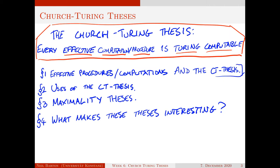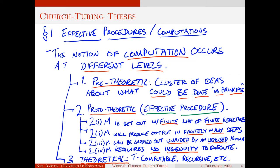In section two I'll talk about some uses of the Church-Turing thesis — how it can pop up in mathematical work as well as being an analysis of computation. In section three we'll discuss maximality theses, which are very close relatives of the Church-Turing thesis. Then in section four I'll close with some questions about what makes these kinds of theses interesting and how we might move forward philosophically.